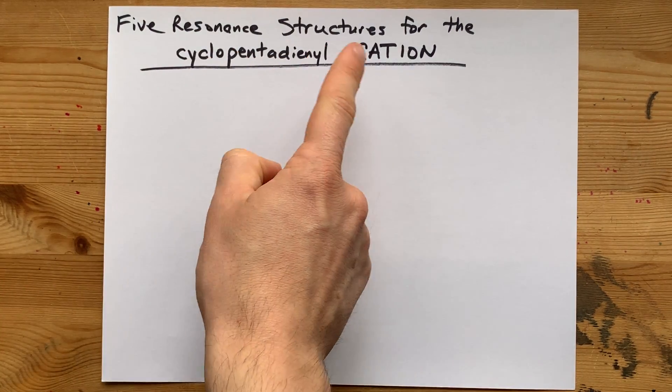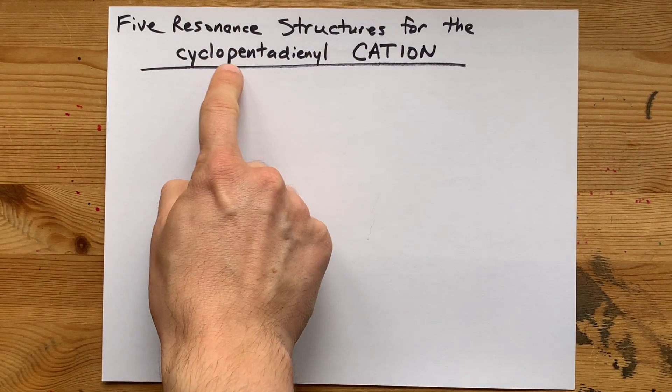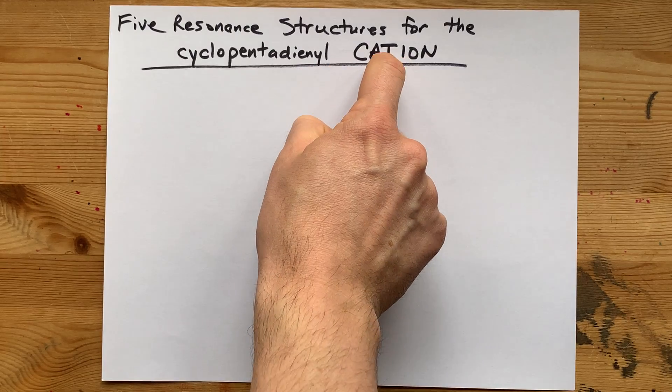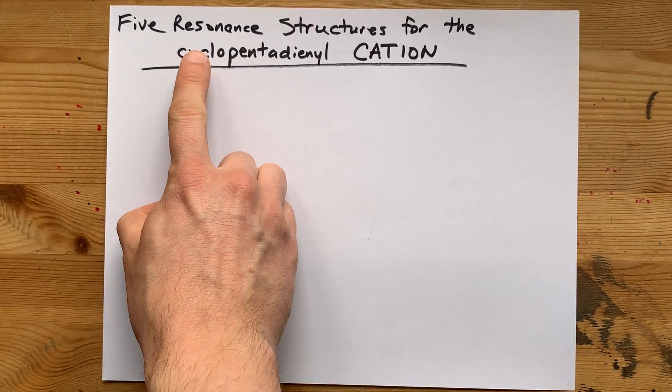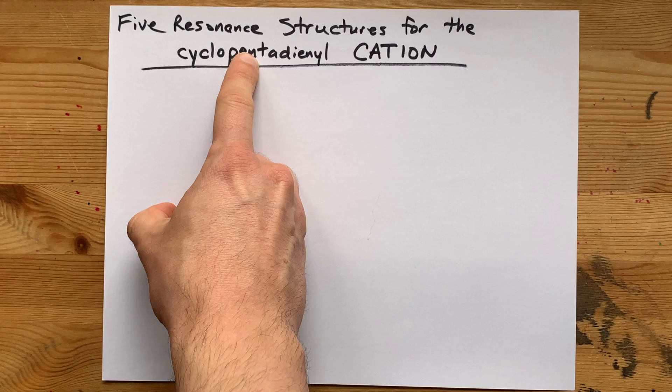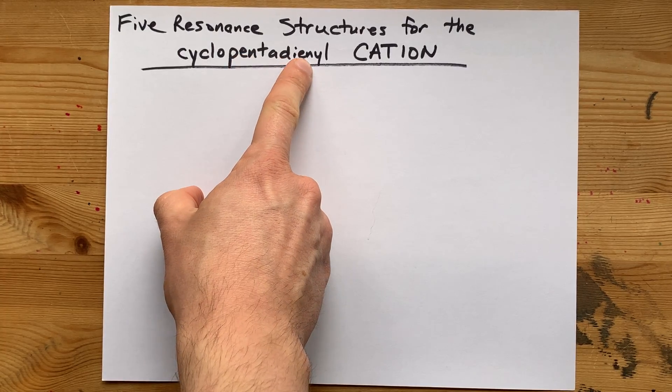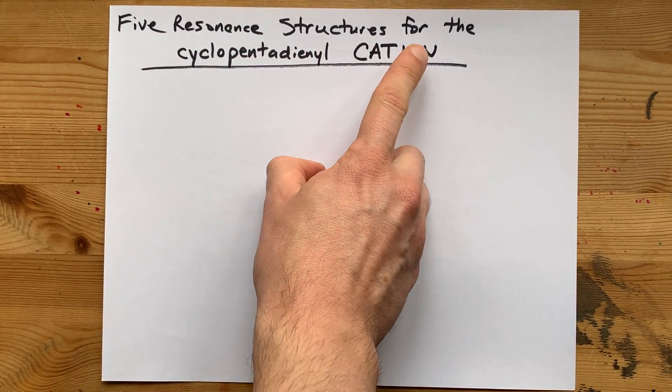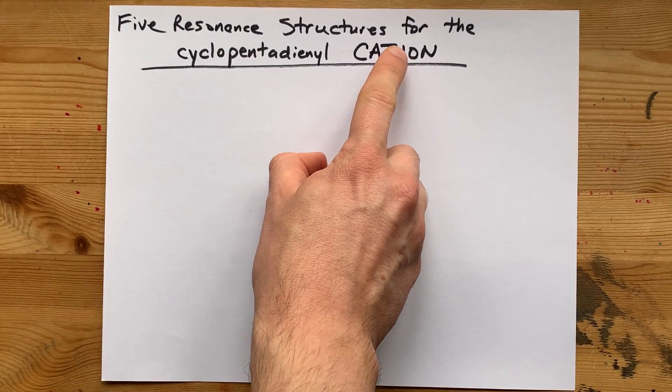I'm going to draw the five resonance structures for the cyclopentadienyl cation. This is a ring of five carbons with two double bonds and a formal charge of plus one.